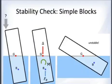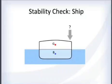The moment continues rotating the block counterclockwise, causing it to be unstable — it keeps flipping over. This is an unstable block.